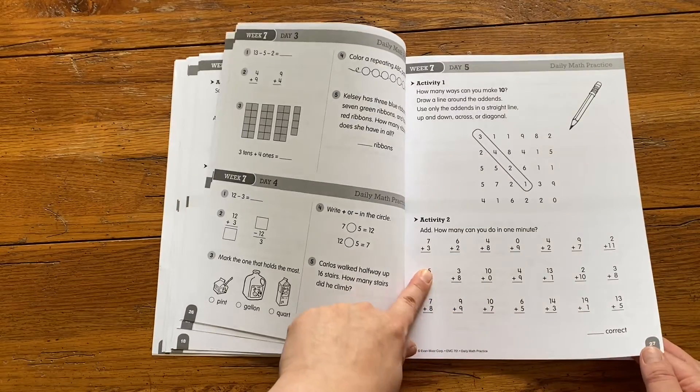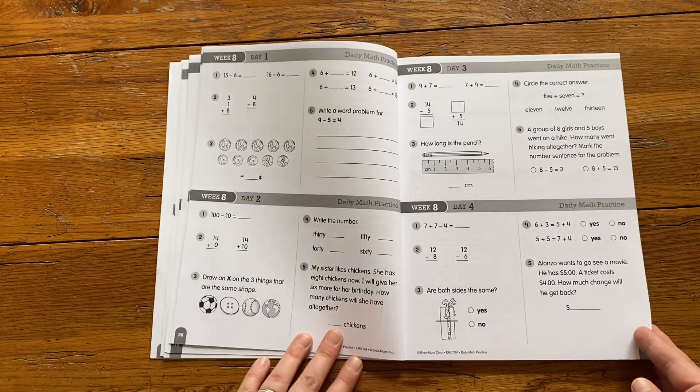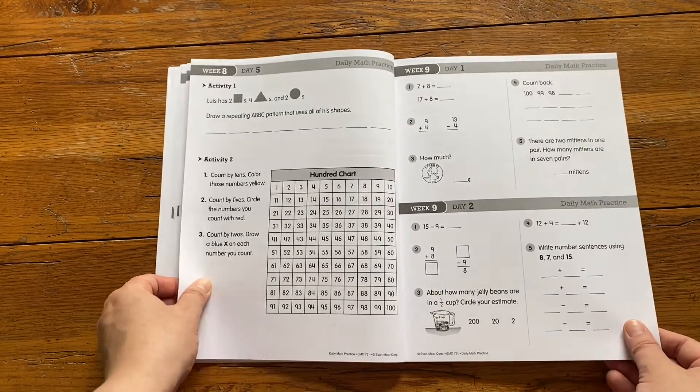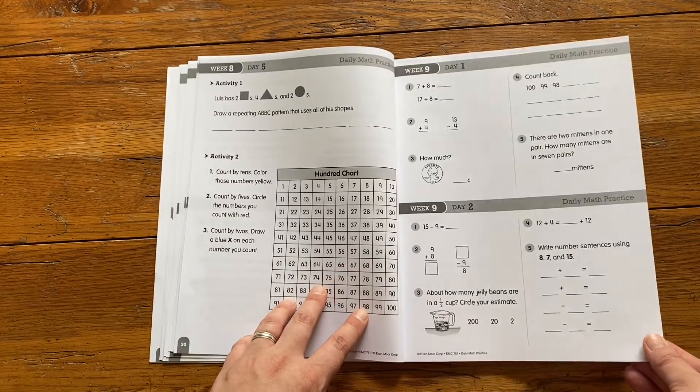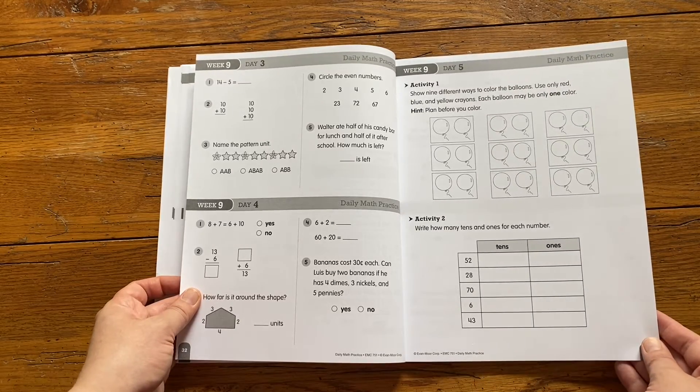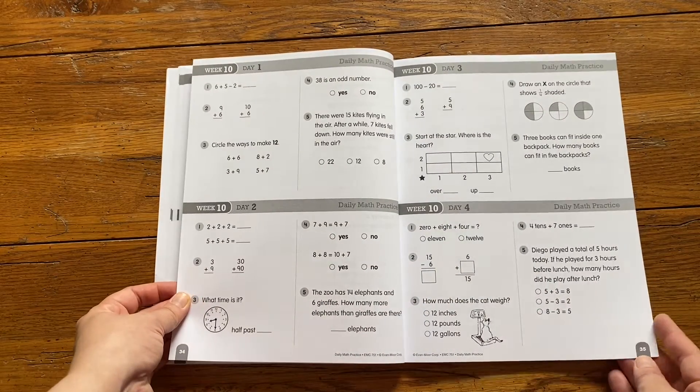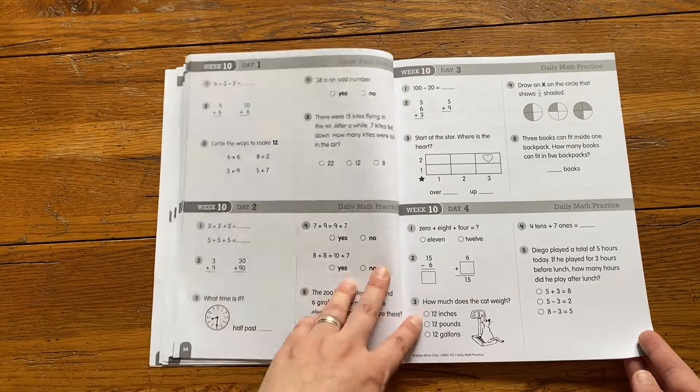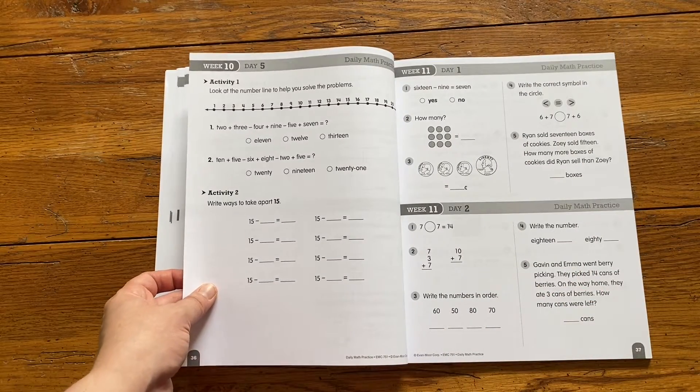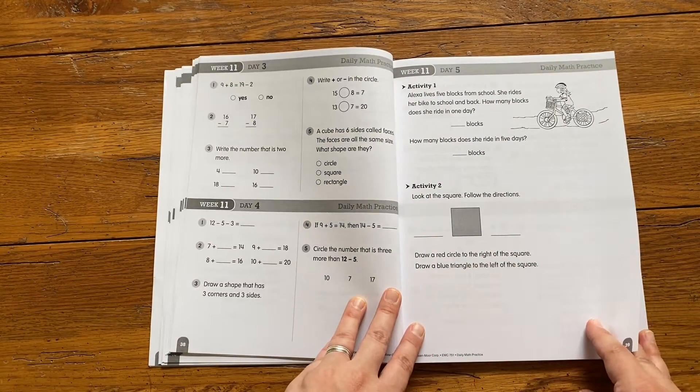There's some timed addition if you want to do that. Write your own word problem. Anyway, I just really like that it's not 5 million addition problems. There's some little logic puzzles. There's lots of word problems, but it's very quick and easy and simple and just really hit what I wanted, which was to have him just keep practicing those math skills just a little bit every single day. Nothing that's going to stress him out or make him take a ton of time.